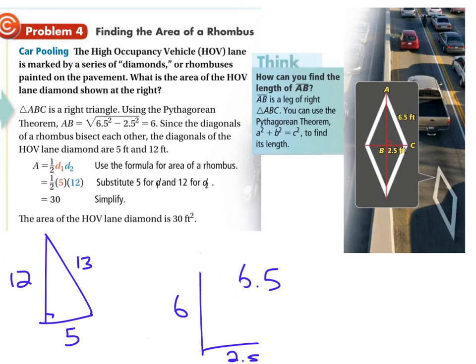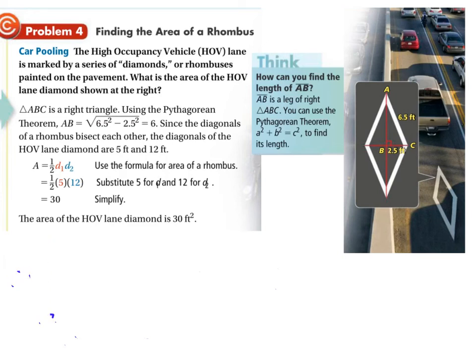That's worth mentioning because there are kids that are going to start to make that connection, and then your life just frees up incredibly because you can see what's going on with the numbers. Anyway, you plug all those numbers in and simplify it out. So if AB was 6, then this whole length is 12, and this was 2.5 so that's 5. So then you've got 12 times 5 times one half, and you get 30 square feet.